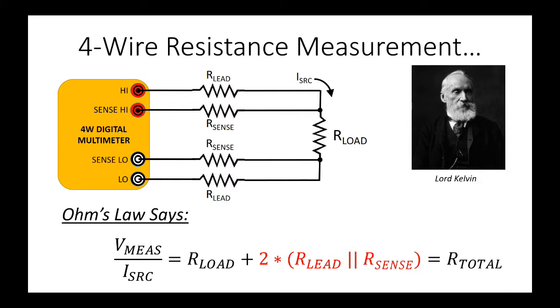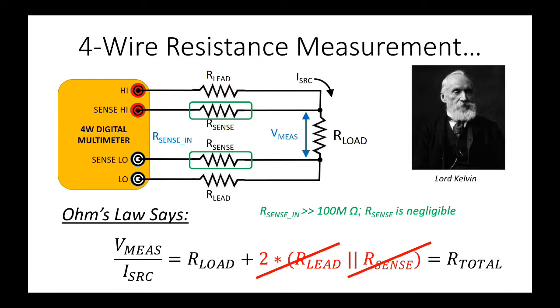While you now have a second set of test leads in your setup, we can consider the following: The R sense input is a very high resistance, and because it is in parallel with the load, its impact along with that of the sense test leads on the measurement is negligible. This allows for the measurement to be made directly at the device under test, and in doing so, we eliminate the error that the main leads have on the measurement.